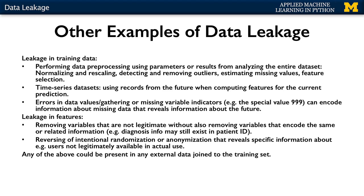In some cases, dataset records are intentionally randomized or certain fields anonymized that contain specific information about a user, such as their name or location. Depending on the prediction task, undoing this anonymization can reveal user or other sensitive information that is not legitimately available in actual use. Finally, any of the above examples could be present in a third-party dataset that gets joined to the training set as an additional source of features, so always be aware of the features in such external data and their interpretation and origin.